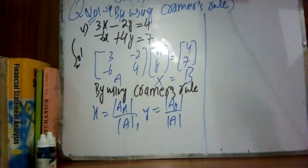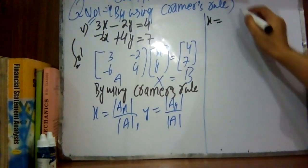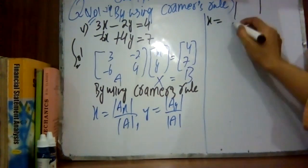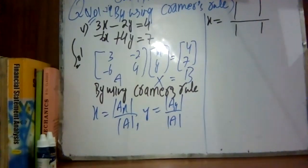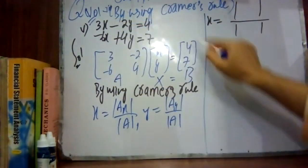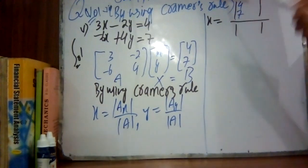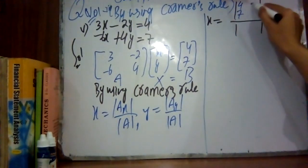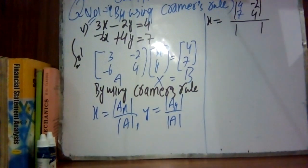First, we find x equals determinant of Ax divided by determinant of A. For Ax, we do not write down x's coefficients. Instead we place the constant terms 4 and 7 in the first column, and the second column remains as is: minus 2 and 4. The A matrix is 3, minus 6, minus 2 and 4.